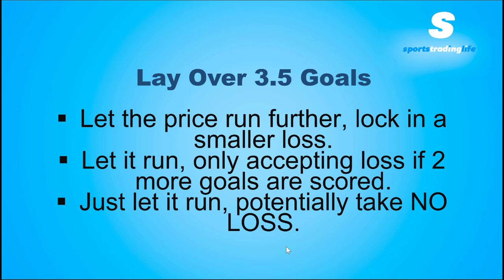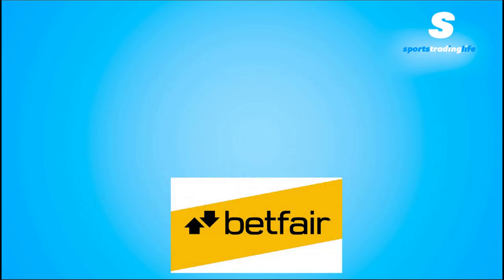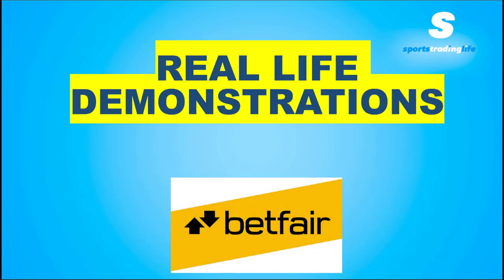You could also just let it run totally and only accept a loss if there is another goal or maybe two more goals scored — that's the whole extra lives thing. That could worsen your loss if the next goal comes soon, but if the second goal is scored in the 80th or 90th minute, it's going to be a tiny loss. Or you could just let it run and potentially take no loss at all. If you've profiled this match as finishing under 3.5 goals and you've been caught by a goal, you move all the red to overs and just leave it. If the match finishes under, you take no loss on the trade.